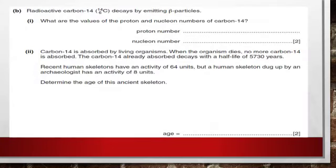B. Radioactive carbon-14 decays by emitting beta particles. What are the values of the proton and the nucleon numbers of carbon-14? Based on our previous discussion, the subscript represents the number of protons. So in this case, the number of protons is equal to 6. The nucleon number is another term for mass number. So the nucleon number is equal to 14.